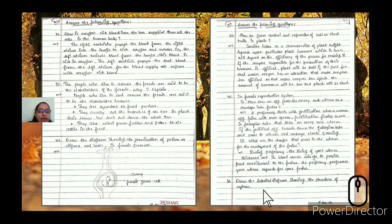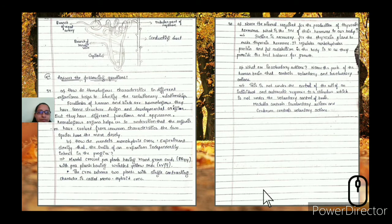Draw the labelled diagram showing the structure of nephron. You need to draw the tubular part of the nephron and connect the veins, branched renal veins and capillaries to it. It is the ultrafiltration unit of the kidney.